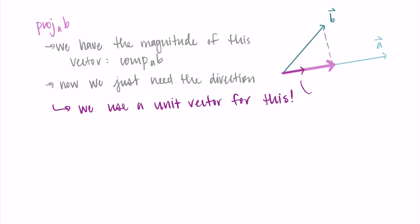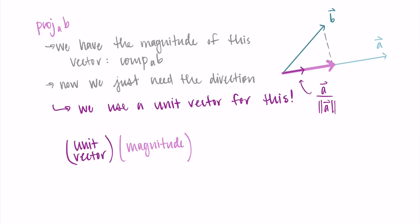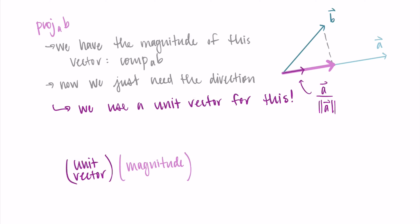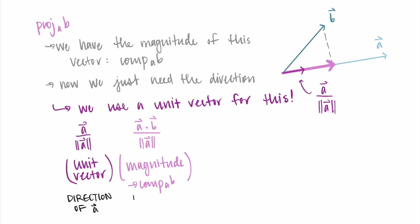The unit vector in the direction of a is the vector a divided by its magnitude. We then multiply that unit vector by the scalar magnitude — the component of b along a — to scale it to the right length. So we take vector a, shrink it to a unit vector, and multiply by a·b/|a|. This gives us the direction of a times the magnitude, giving us both a magnitude and a direction.